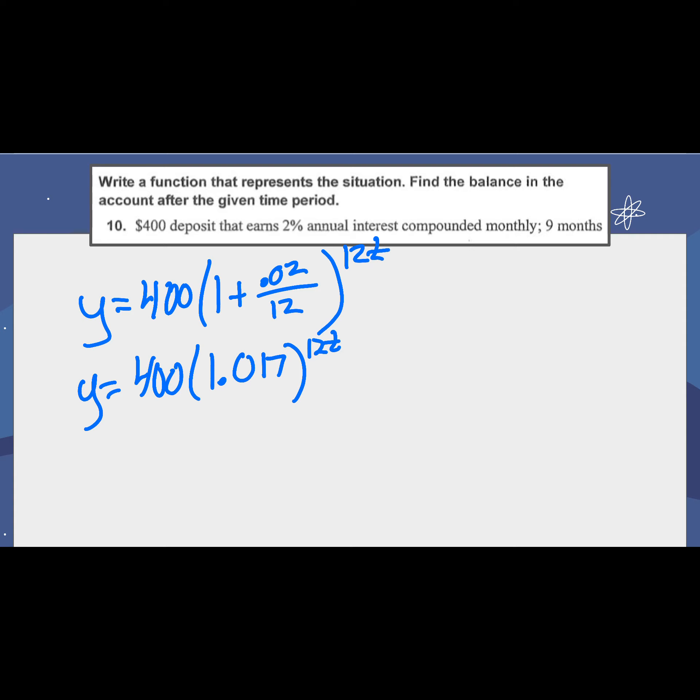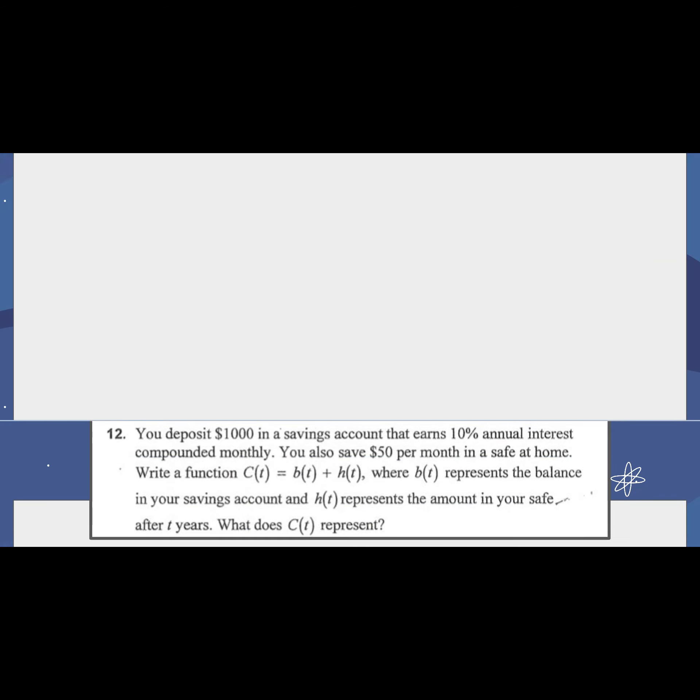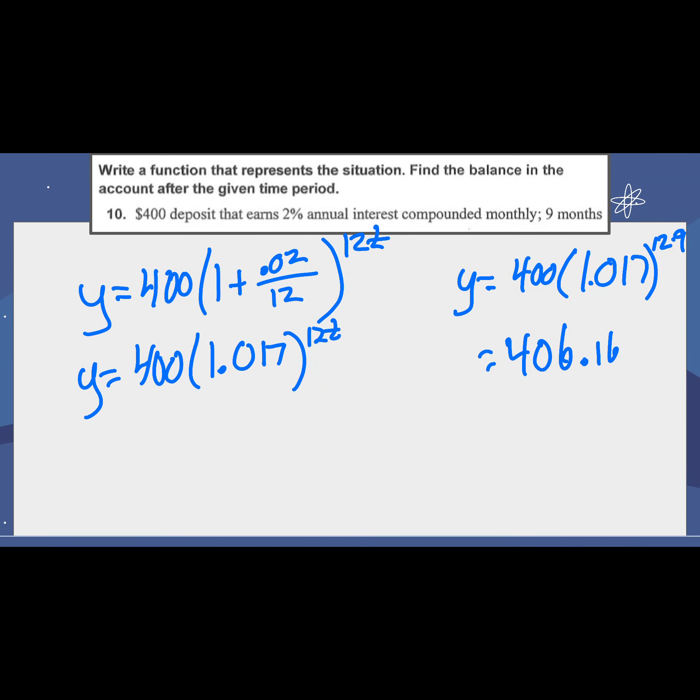Now, they tell us, alright, find out how much is going to be in there after 9 months. So T equals 9. 12 times 9, open our parentheses, and they'll end up giving us $406.16 after 6 months. What questions do we have on that? We'll look at one more example. Do we have any questions on that?